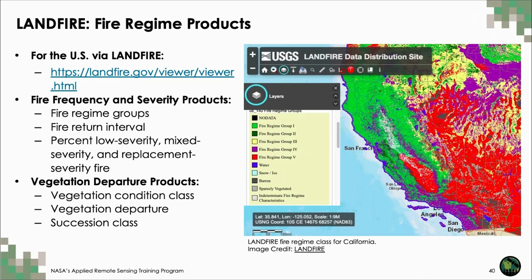LANDFIRE, mentioned in session two for vegetation type and fuels characterization, also includes useful fire regime products, including fire frequency and severity products useful for mapping fire regime groups and intervals, as well as percent low severity, mixed severity, and replacement severity fire. A screenshot of the LANDFIRE interface shows fire regime groups across California, with much of the state classified as fire regime group one, characterized by frequent fires at an interval of zero to 35 years and typically low burn severity.